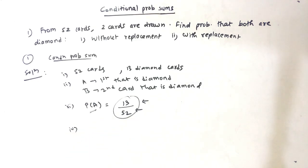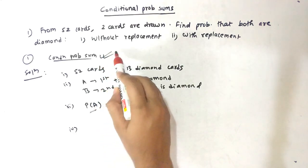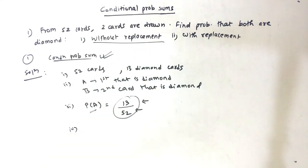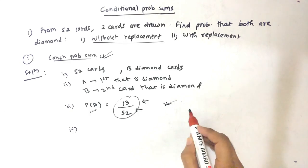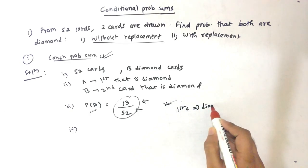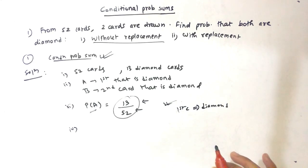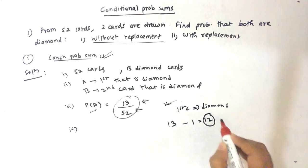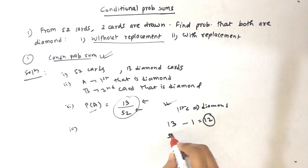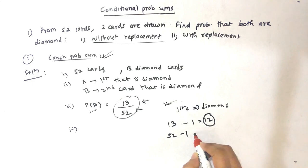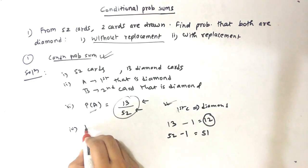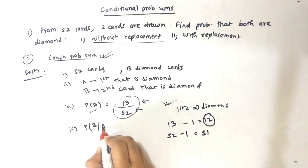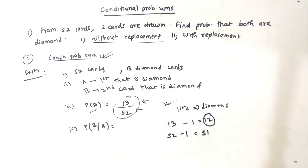Now the fourth step — this is interesting. Without replacement means the first card drawn is diamond. Now one diamond card is gone: out of 13 diamonds, one is removed, leaving 12 diamond cards. Also, one card is gone from the total 52, so we now have 51 cards remaining.